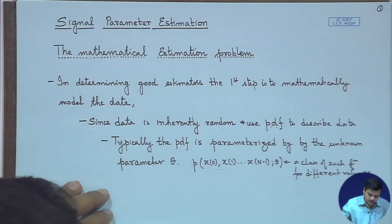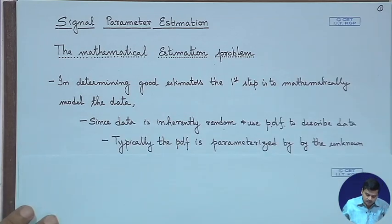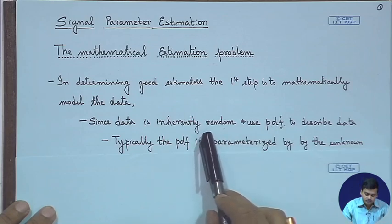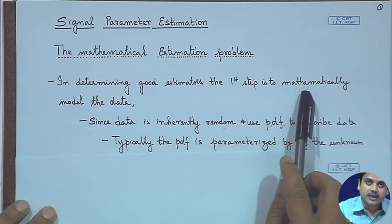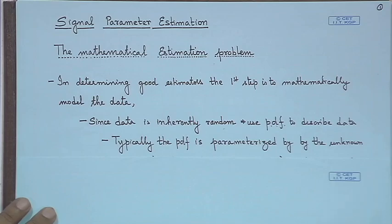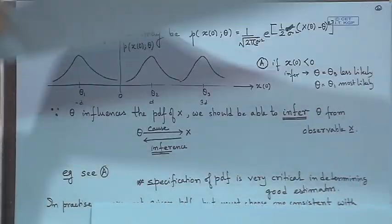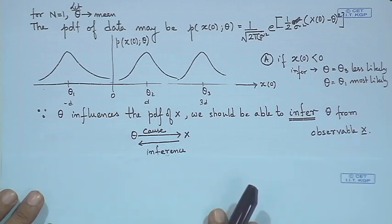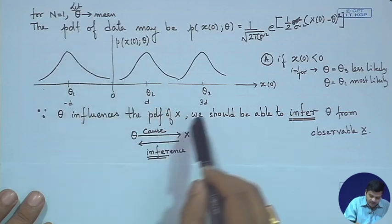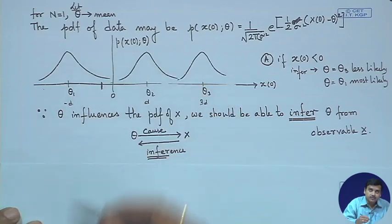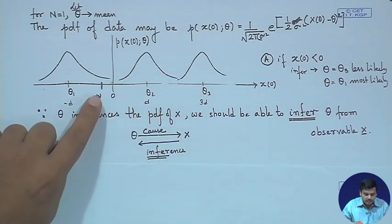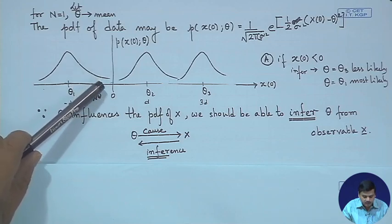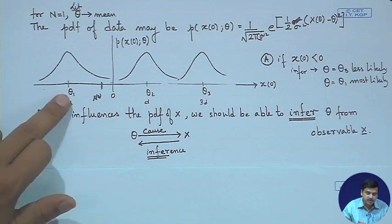We studied the signal parameter estimation problem. We stated it as a mathematical problem and said that since the data is inherently random we use a PDF to describe the data. In determining good estimators, the first step is to mathematically model the data. Typically the PDF is parameterized by an unknown parameter theta. We introduced the concept of the likelihood function: if x₀ is observed, going up along the curve to the y-axis gives the likelihood of observing x using a function parameterized by the mean theta.